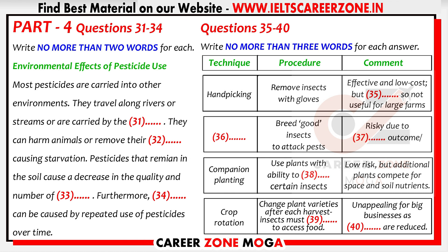Good evening. I'm here today to present the findings from our research into pesticides and alternatives to using them. I'd like to begin by talking about some of the environmental effects of pesticide use. Pesticides have proven to be very harmful to our environment. The principal reason is because nearly all pesticides travel beyond their target areas. This often happens when rain carries pesticides along water channels such as rivers. When dropped by plane, wind blows pesticides into wild areas up to several kilometers away.